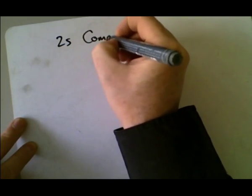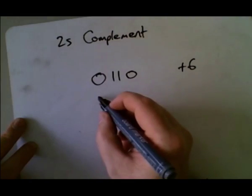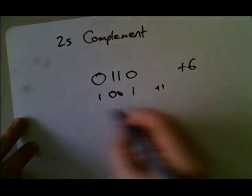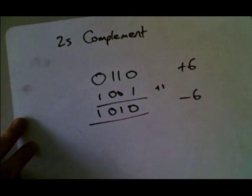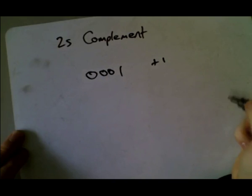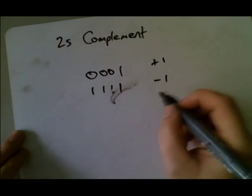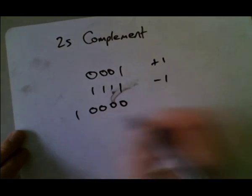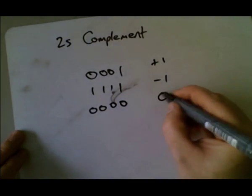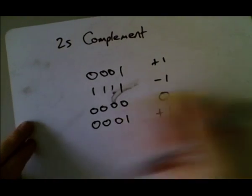So what we do instead is we use something called two's complement. And two's complement works in exactly the same way. Let's take our 6 again, we flip all the bits, and we add 1, and that represents minus 6. You flip the bits, you add 1, and what that does is it solves the problem. Because if we've got our minus 1, our plus 1 is this, so our minus 1 is flip the bits and add 1. And then if we add 1 to that number, ignore the overflow, we get 0. And if we add 1 to that number, we get plus 1, and that works.